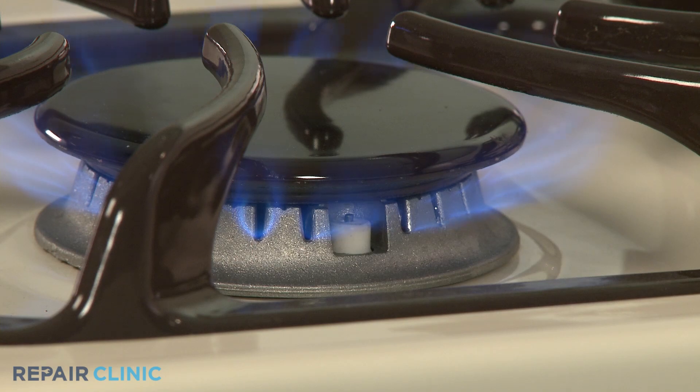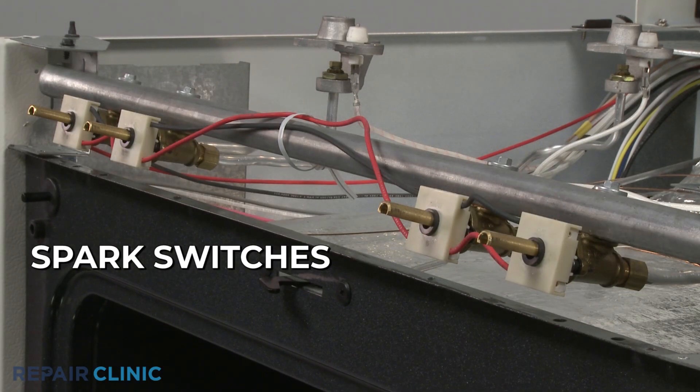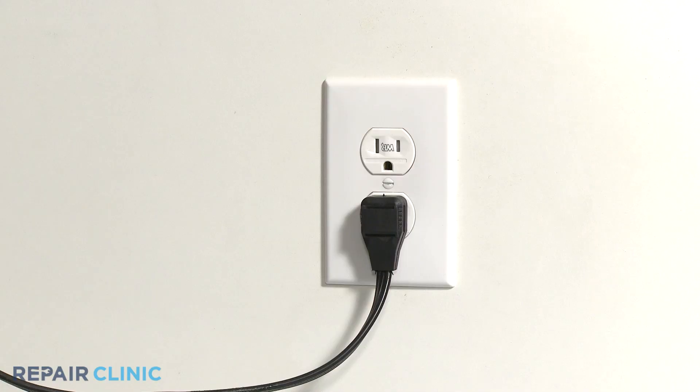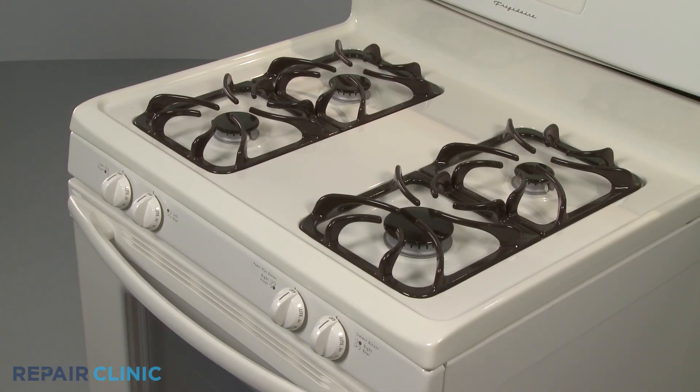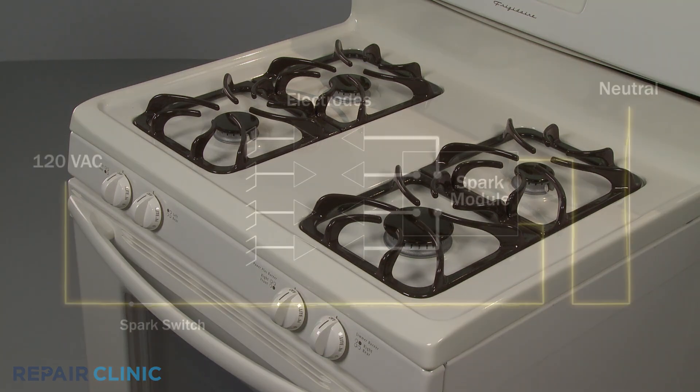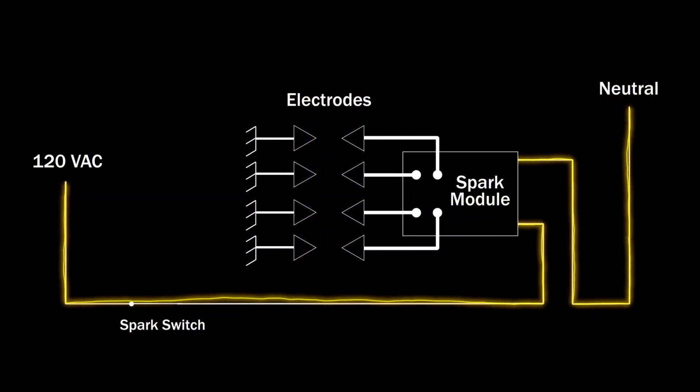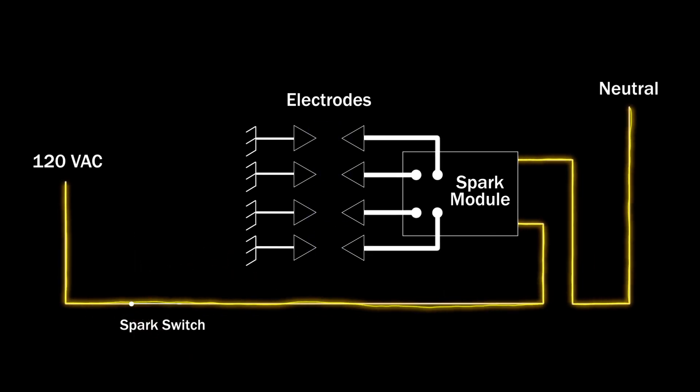If the electrodes spark continuously, one or more of the switches has probably shorted closed. A short is usually caused by liquid getting into the switch. If this happens, you should unplug the appliance and give the switches time to dry out. If the electrodes are still sparking continuously once the appliance is plugged back in, one or more of the switches has probably failed and will need to be replaced.